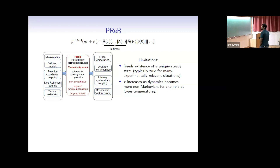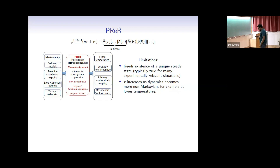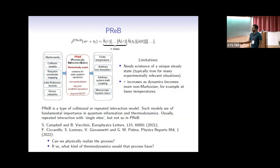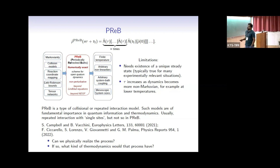There are limitations. First, the method requires a unique steady state, and it is not always easy to know in advance whether you have one — though it is often true in experimentally relevant situations. Second, as you go more non-Markovian, you require larger values of τ and thus larger computational resources. This approach is essentially a type of collision or repeated interaction model, which is of interest in quantum information and thermodynamics, usually studied with single sites rather than chains.